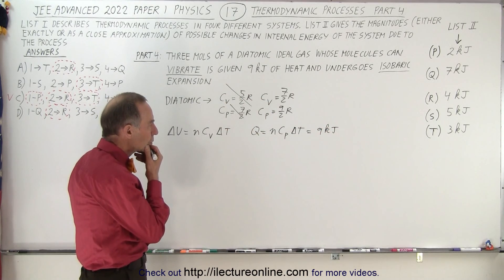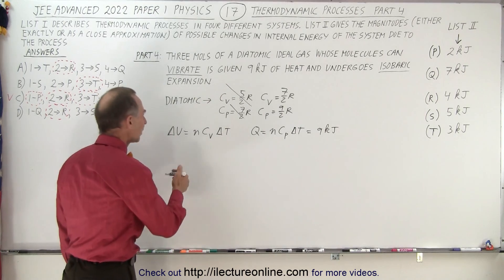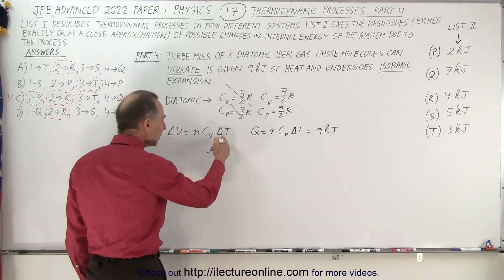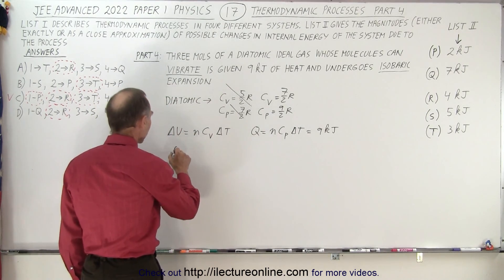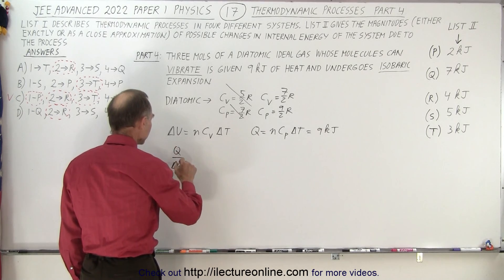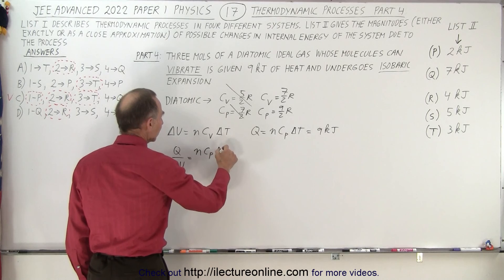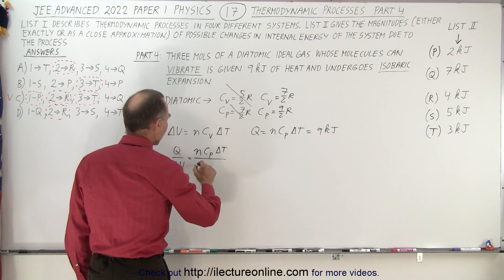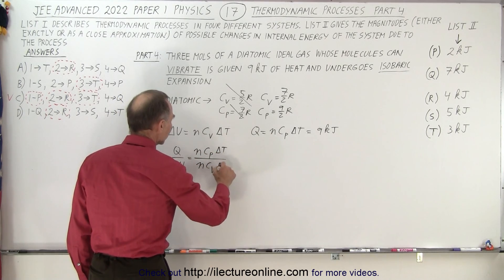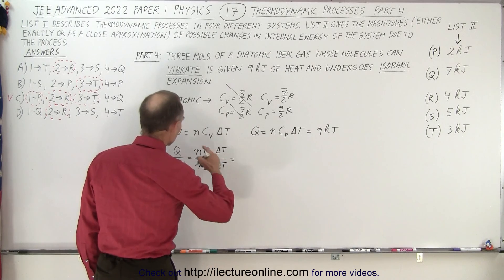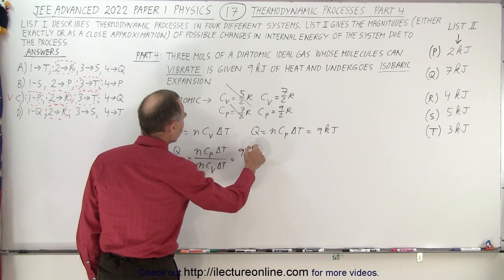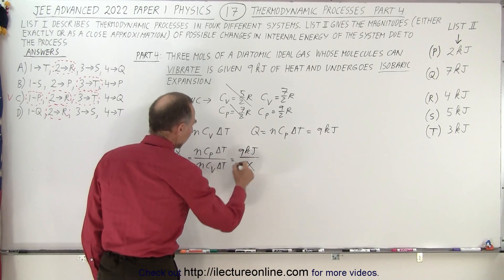So what we could do is we could divide one by the other to eliminate delta T. So we can write Q divided by delta U which is equal to N C sub P delta T divided by N C sub V delta T which is equal to nine kilojoules over let's call it X.